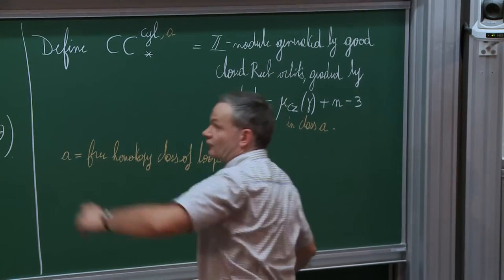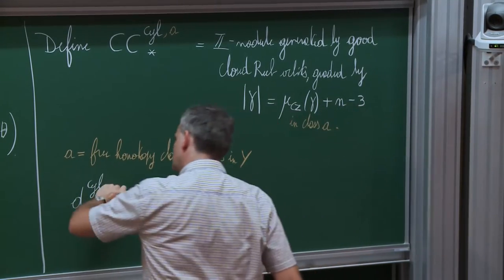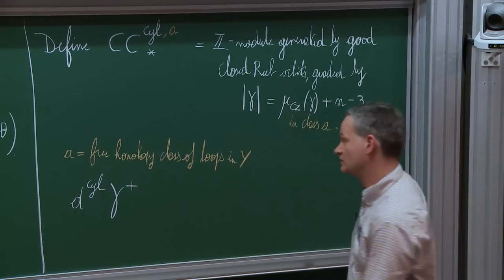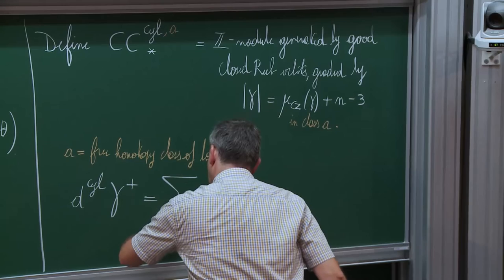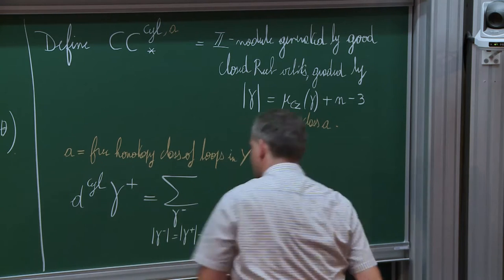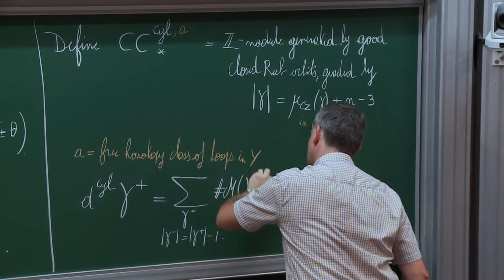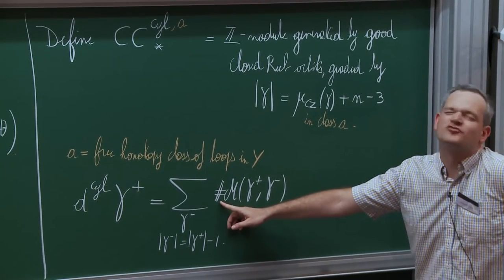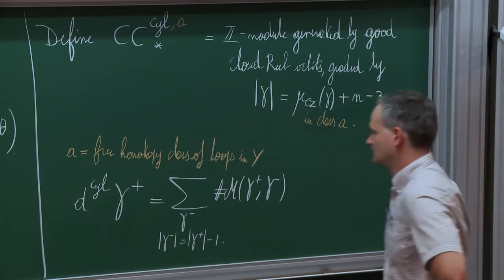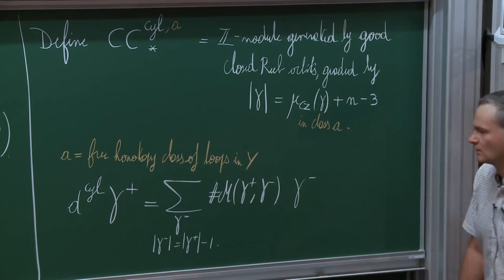For the holomorphic cylinders, one can define a differential d_cyl by setting d(γ⁺) equal to the sum over all orbits γ⁻ with grading one less than γ⁺, of the algebraic count of elements in the moduli space M(γ⁺, γ⁻). You can associate a sign to elements in moduli spaces via a coherent orientation construction. The restriction to a free homotopy class is not an issue because if γ⁻ appears in the differential of γ⁺, they are homotopic—there is a cylinder between them.